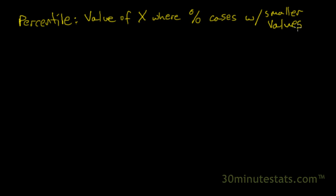We want to find the value of a variable x where there's a specific percentage of cases with smaller values. So if we're looking for the 20th percentile, we want to know the value of x where 20% of our cases have smaller values. We saw there was a way to do that with cumulative frequencies and a frequency distribution table in the last video.